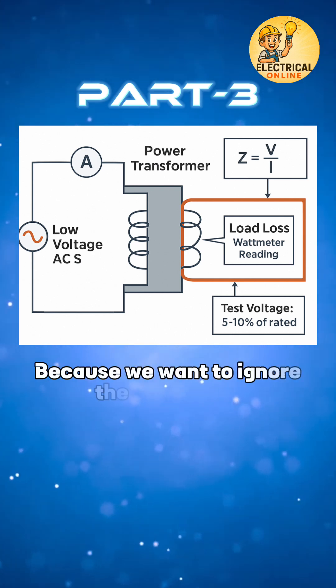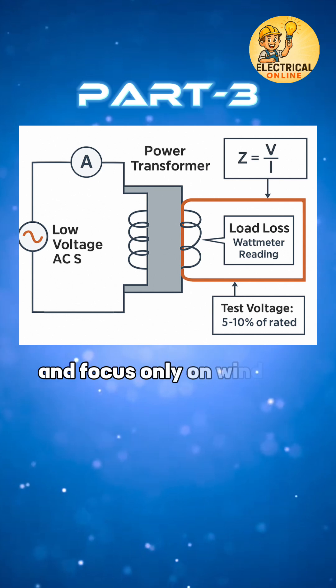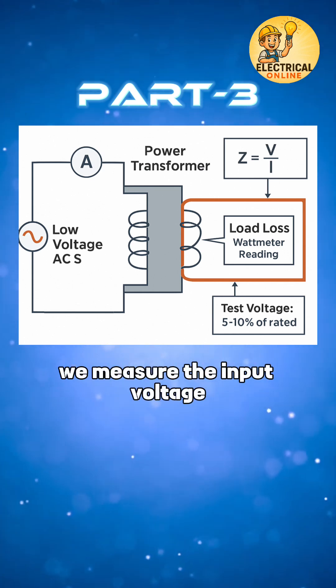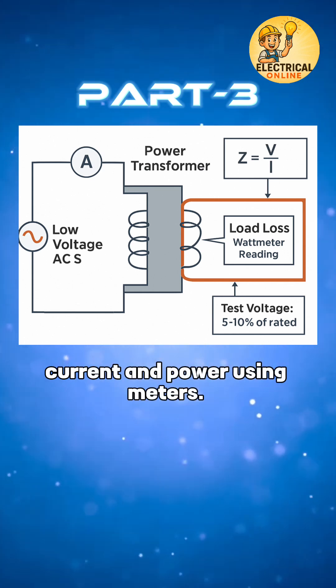Why low voltage? Because we want to ignore the core losses and focus only on winding behavior. We measure the input voltage, current, and power using meters.